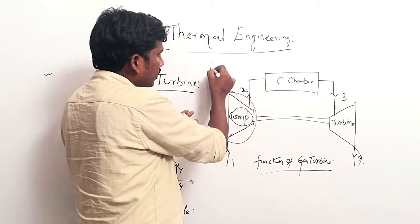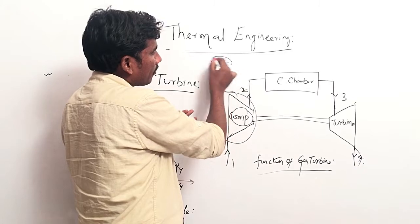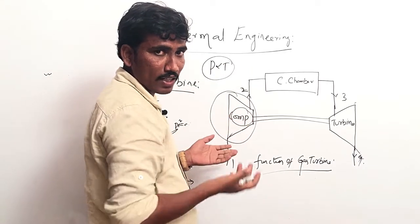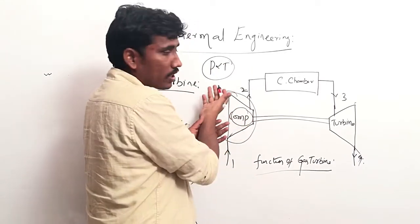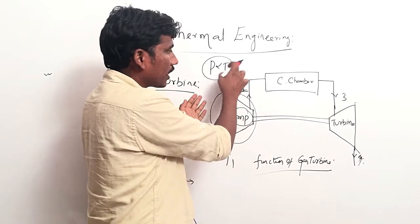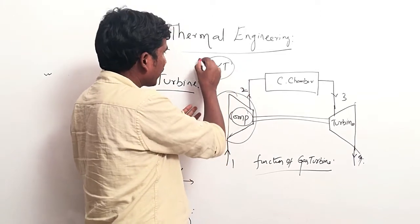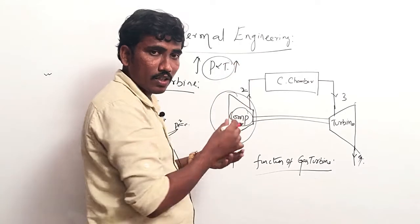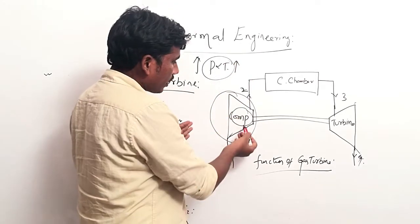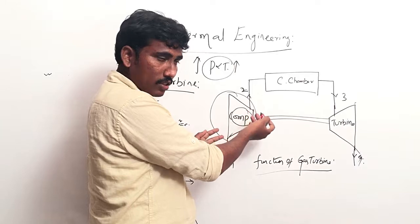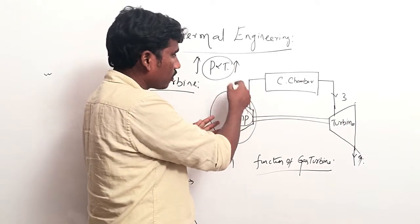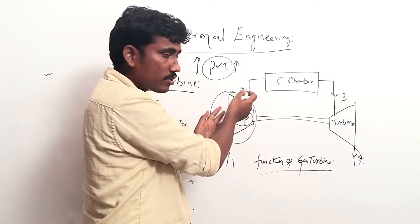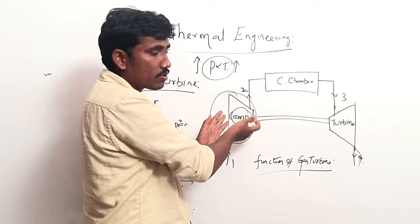As you know, pressure is directly proportional to temperature — by Charles's law, pressure is directly proportional to temperature. If pressure increases, then obviously temperature will also increase. Here in the compressor, we are increasing the pressure, so the temperature also increases. At the inlet of the compressor, pressure is P1 and temperature is T1, but after the compressor it becomes P2 and T2.